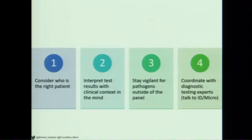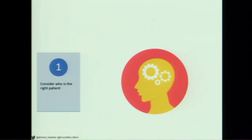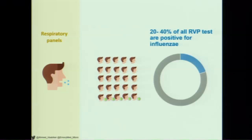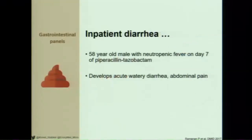How often does this false positive happen and why? The first step is the pre-analytical phase: who is the right patient? If you order the wrong test for the right patient and get the wrong answer, you still have the wrong answer. During flu season — December to April — up to 40% of all RVPs are positive for influenza. If you're in a bad flu season, is your multiplex panel really the right test, or should you be doing targeted testing for flu because your pre-test probability is so high?